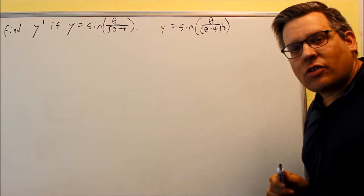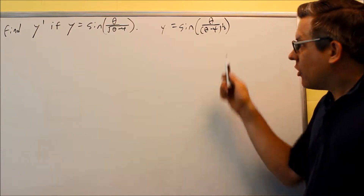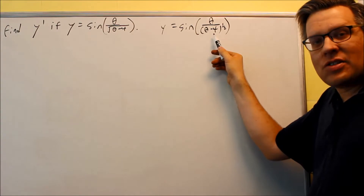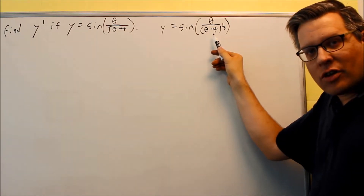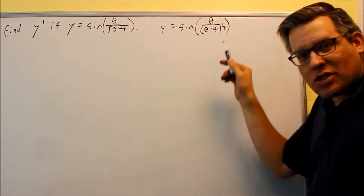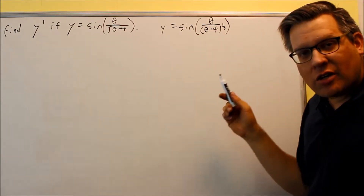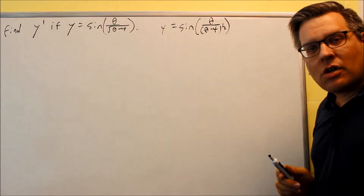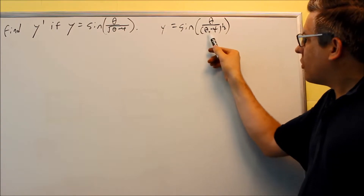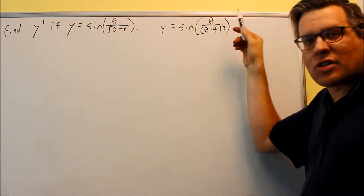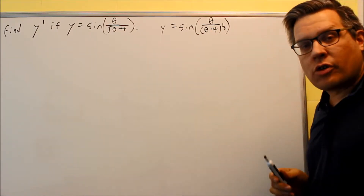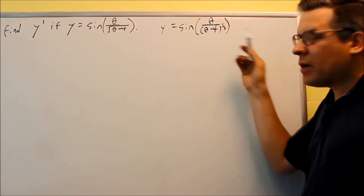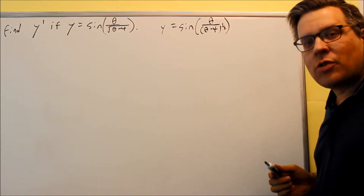How do you know when you have to use a chain rule? It's whenever you have something inside that's not a single theta — if you have theta plus or minus something, or two times theta or something else, that tells you you're going to have to use a chain rule. In this case, because I have theta minus 4, that tells me I have something going on that requires a chain rule.